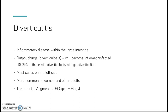Diverticulitis often starts with diverticulosis — outpouchings in the large intestine. Many people have this, and as you get older most people develop it. About 10 to 25% of those with diverticulosis will get diverticulitis, when those outpouchings become infected or inflamed. Most cases are on the left side, and it's more common in women and older adults. Treatment is Augmentin or Cipro/Flagyl.